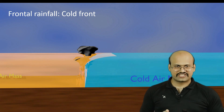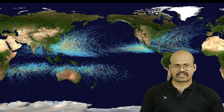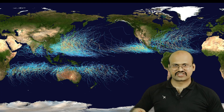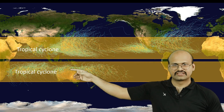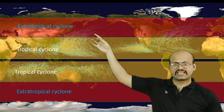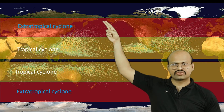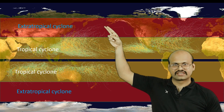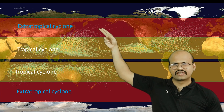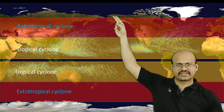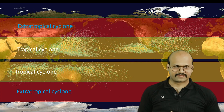Looking at the geographic distribution, tropical cyclones are restricted to the tropical region, roughly 0 to 20–30 degrees latitude, while extratropical cyclones are confined to approximately 30–40 degrees to 60–70 degrees latitude in both hemispheres.